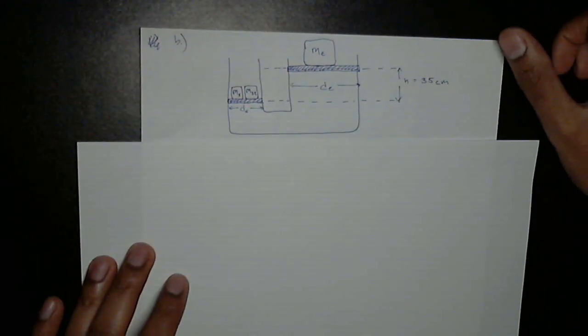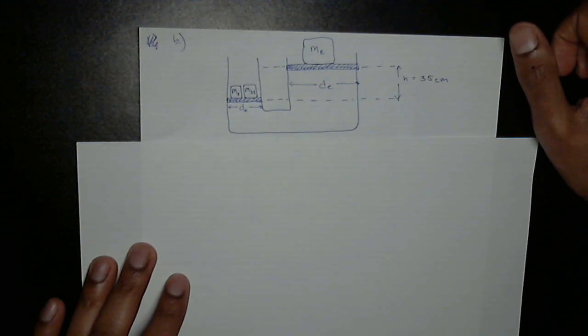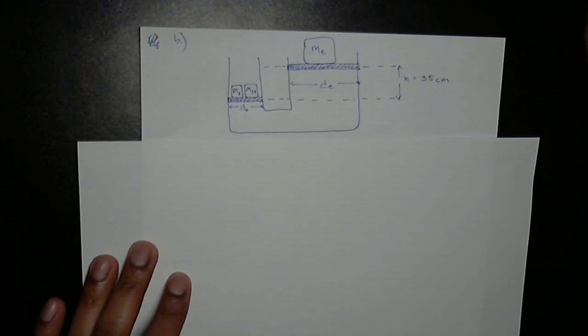So going step by step. The goal of this problem as a whole, both a and b is to get you to understand Pascal's law. So in part a Pascal's law applied perfectly. So we were able to set the pressure at the student's platform equal to the pressure at the elephant's platform.